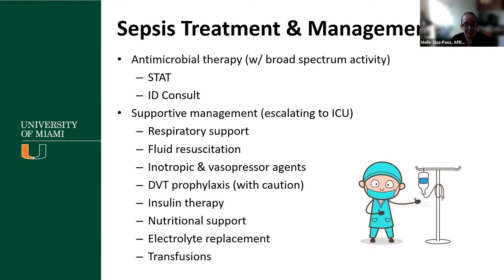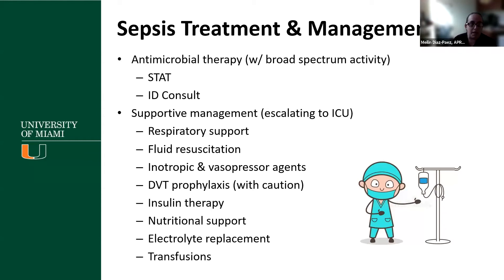Supportive management: escalate to ICU if the patient is septic. Provide respiratory support with ventilation if needed, or sometimes it's as simple as a face mask or Venturi mask. Fluid resuscitation to bring blood pressure up — typically lactated Ringer's. Inotropic or vasopressor agents if blood pressure is not responding to fluids. DVT prophylaxis with caution, as sepsis can lead to DIC and anticoagulation could worsen that process. Insulin therapy as indicated. Nutritional support. Correct electrolyte imbalances and transfuse as needed for anemia or thrombocytopenia.